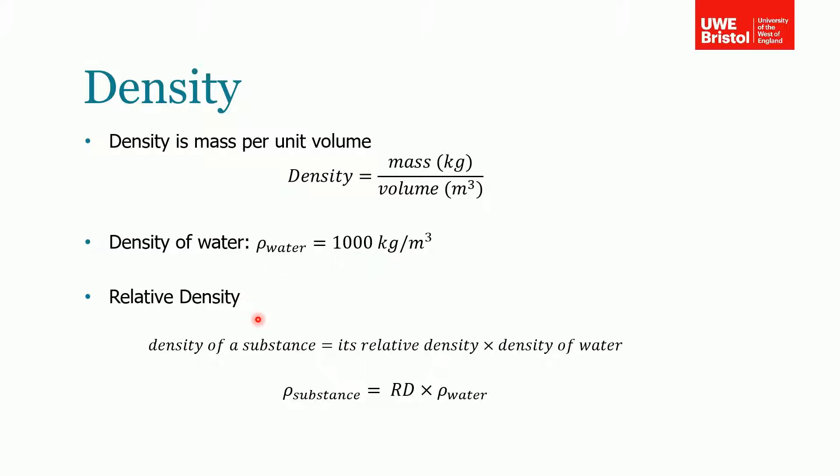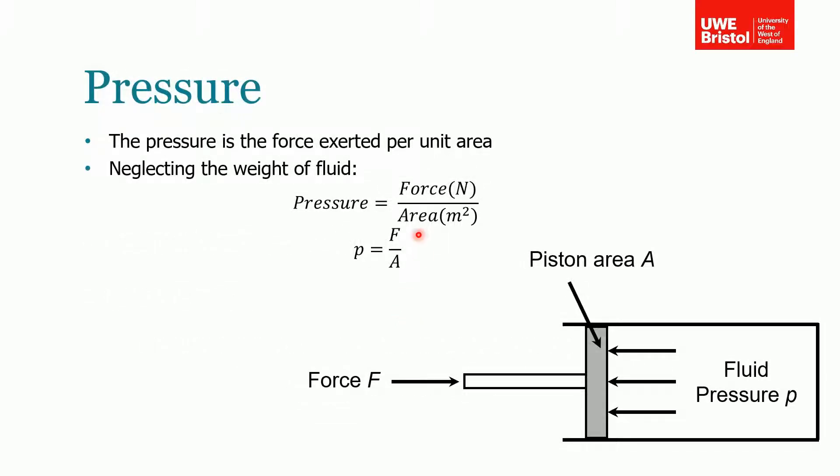Because water has this density, most other substances are compared against or compared relative to it. The density of a substance can be defined in terms of its relative density. Obviously it has its own density, but can be thought about in terms of its relative density. The relative density is the relative density of the substance times the density of water. So if we took some other substance which had a density of 2000 kilograms per meter cubed, then its relative density would be two.